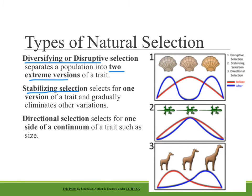Stabilizing selection is when the environment selects for one version of the trait and the other versions are gradually eliminated. We also saw that with the moths — more frequently seeing dark moths during high pollution, and more light moths now that lighter tree bark is more common in the environment.